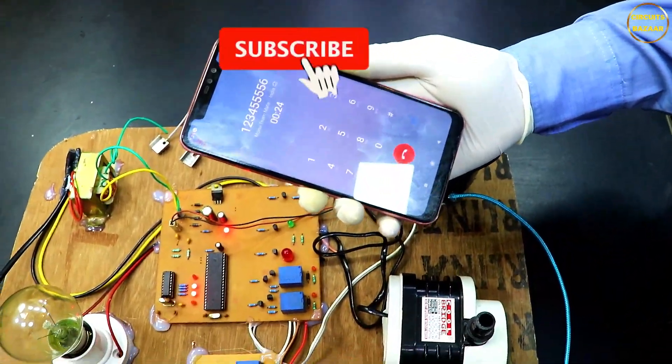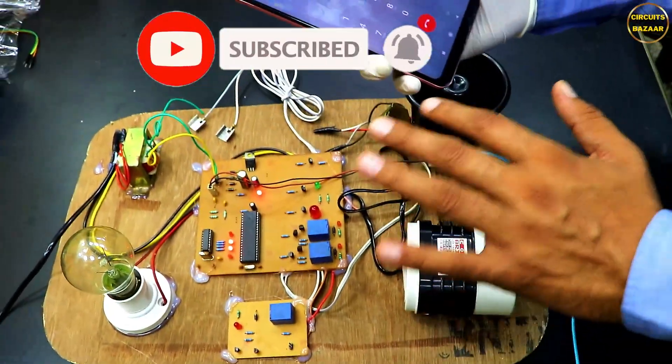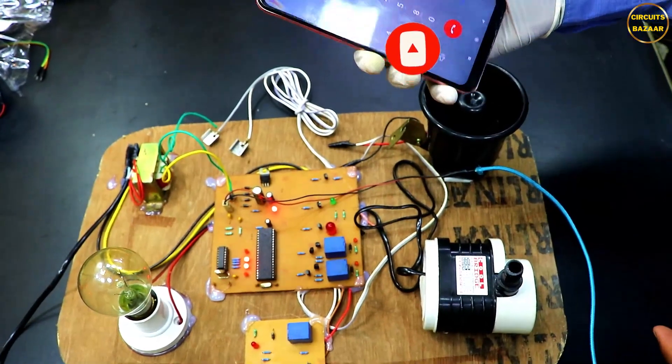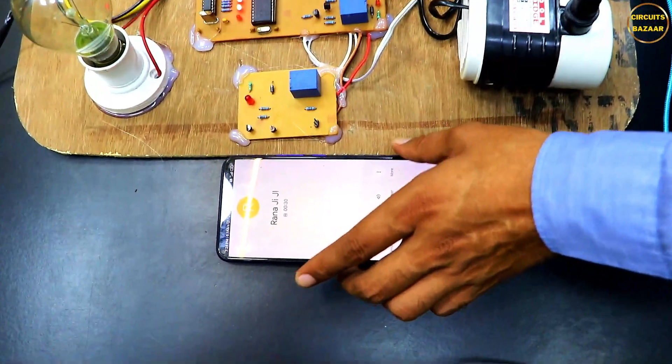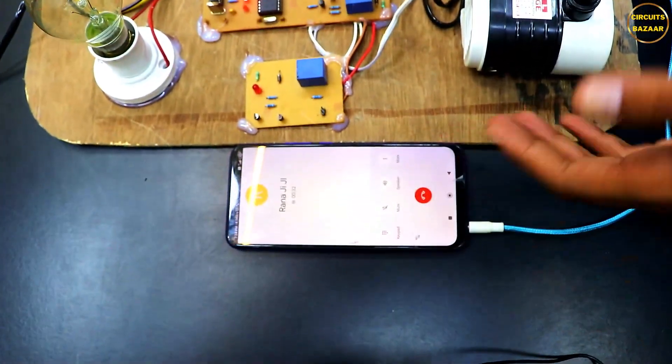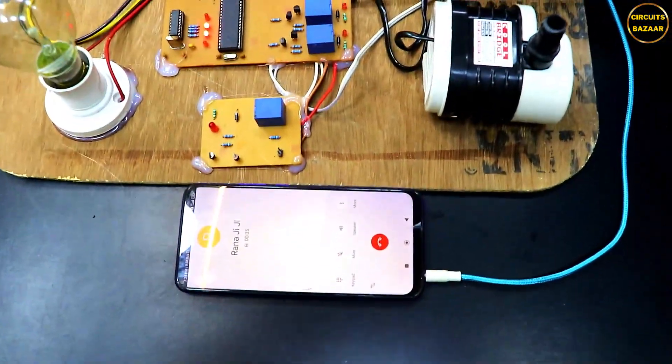So this is the wireless operation. Now this phone can be anywhere in the world and this project can be also anywhere in the world, but still this phone will be able to control this project. Any phone, you just need to make a call on the GSM mobile number. You can put a $250 phone as well, a very cheap phone, to build a wireless network.